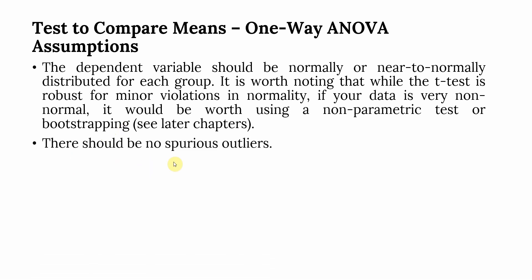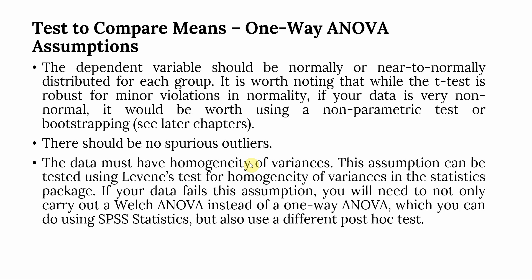There should not be too many spurious outliers. The data must have homogeneity of variance, which can be tested using Levene's test for homogeneity of variance in the statistics package. If your data fails this assumption, you will need to carry out Welch ANOVA instead of One Way ANOVA — which you can do using SPSS or R — and also use different post-hoc tests.